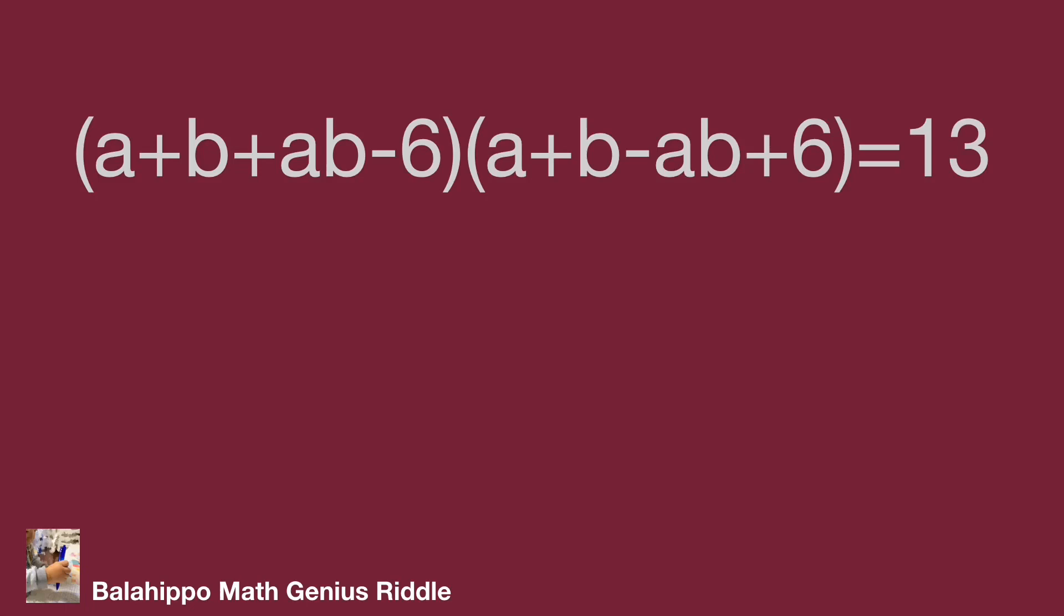Due to A and B being integers, two quantities multiplied equal 13. Then (a + b + ab - 6) and (a + b - ab + 6) could be 1 times 13, 13 times 1, -1 times -13, or -13 times -1. So let's find the results one after one.